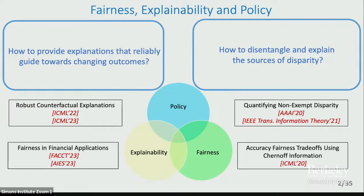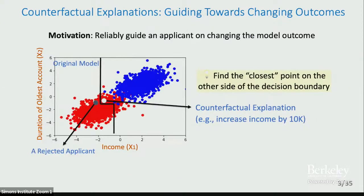I will be spending more time on our recent work on robust counterfactual explanations. So what are counterfactual explanations? Let's say you apply for a loan and the loan gets rejected, and we would want to tell the customer or applicant what they need to do to be accepted for the loan. So counterfactual explanations become the closest point on the other side of the decision boundary — like increase your income by 10K, and then you will be accepted for this loan.